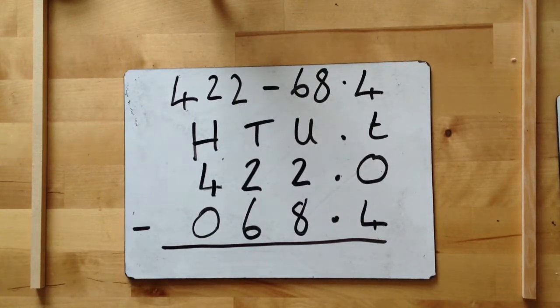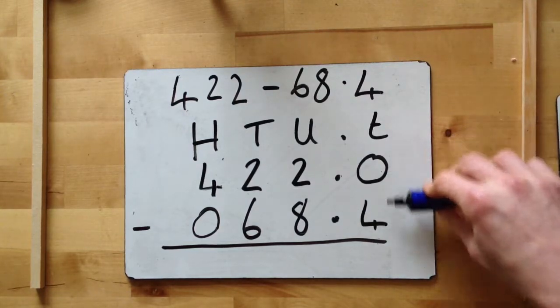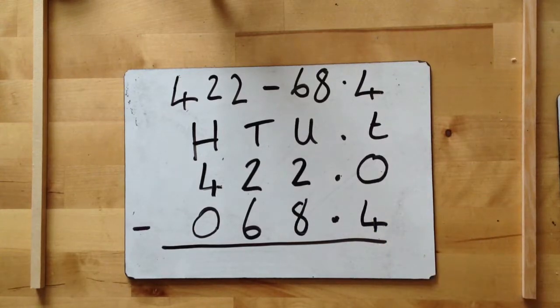The third rule of subtraction is going to come into place straight away. We start from the right. We go zero take away four. We have a problem straight away. Our problem is the top number is smaller than the bottom number.